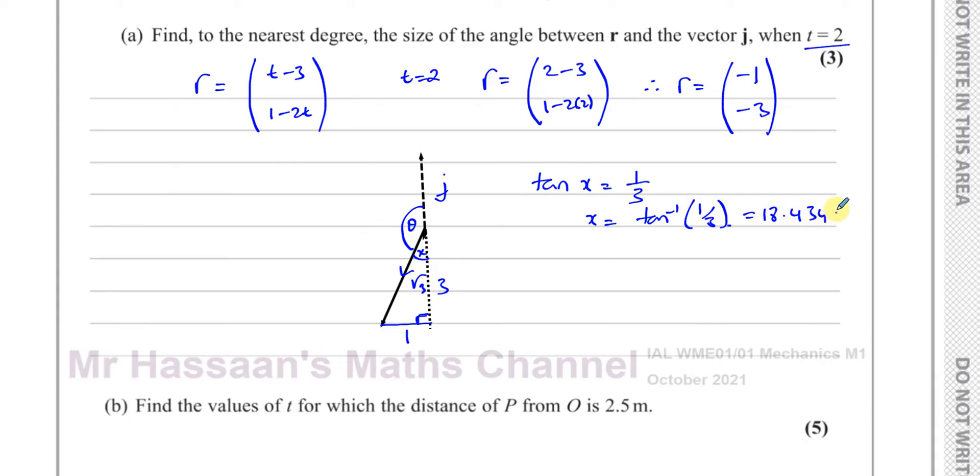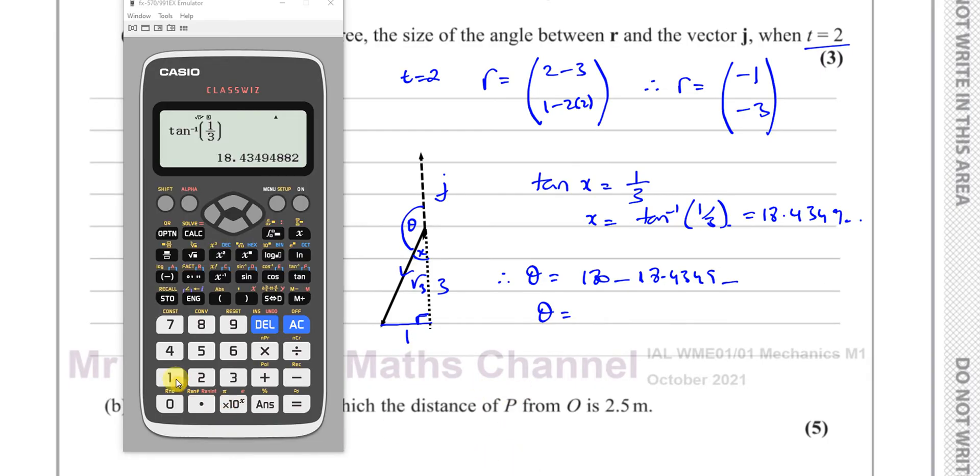So our angle which we call theta is 180 minus 18.4349. So the angle we need is 180 take away this angle that we had before, so we get 161.565 degrees.